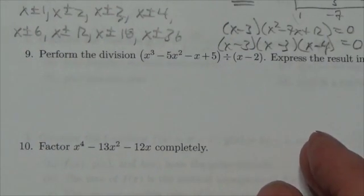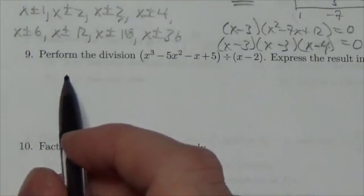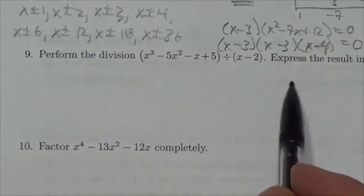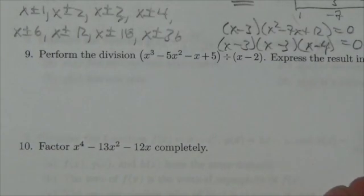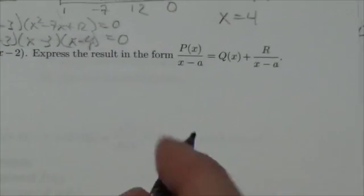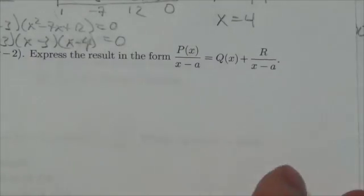Hi everyone, this is the Math 30-1 Functions Review, and this is question 9. I'm going to perform the division and express the result: P(x)/(x-a) = Q(x) + R/(x-a). That's the form of the answer, this is the way they want us to write it.